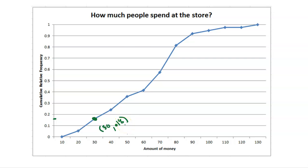Remember, a percentile is the percent of data at or below your value. This value is 30 — $30 spent at the grocery store — 18% of people spent that much or less, which tells us automatically that 82% of people spent more.